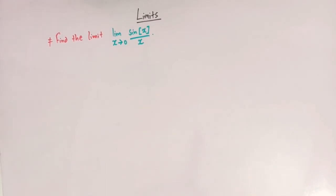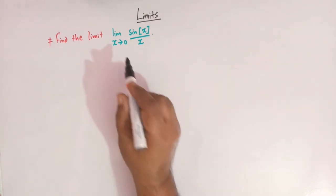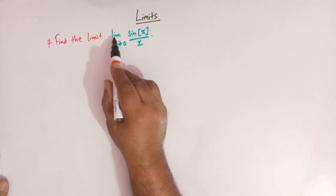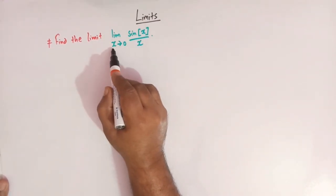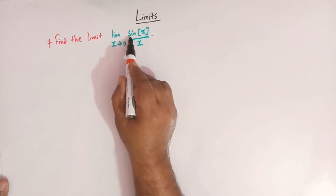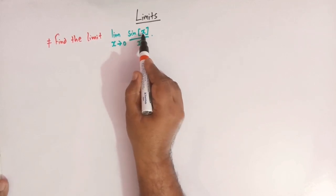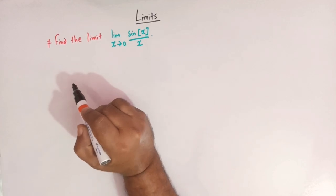Hello viewers. In today's class we are going to discuss one very important and conceptual problem from limits. We have to find this limit when x tends to 0, and we have sine of greatest integer of x divided by x.